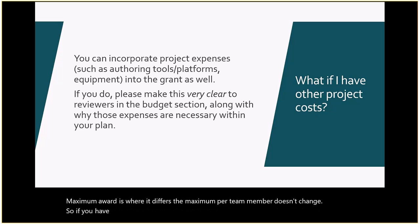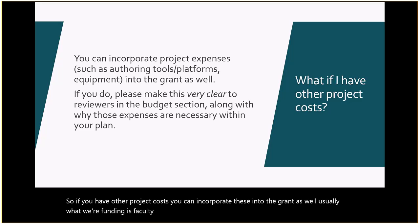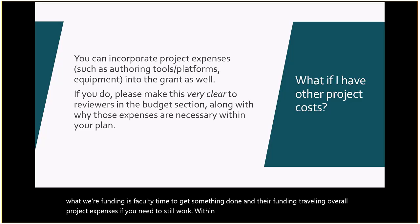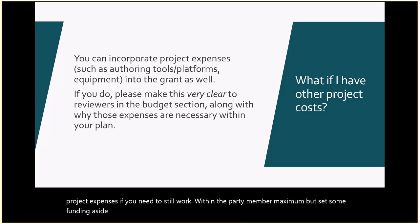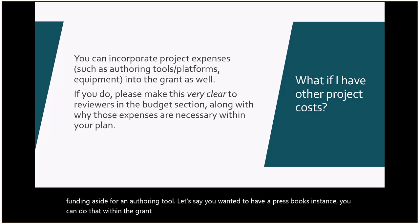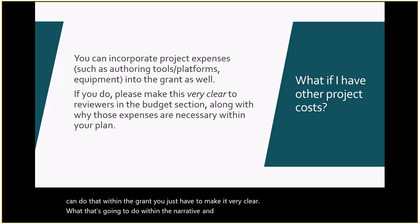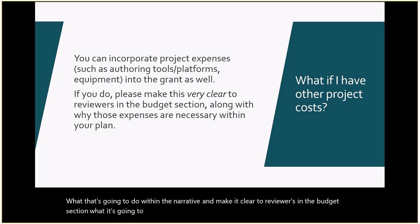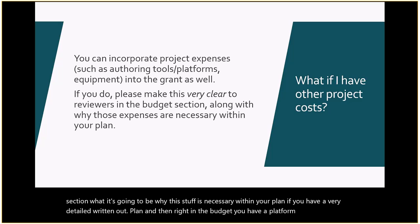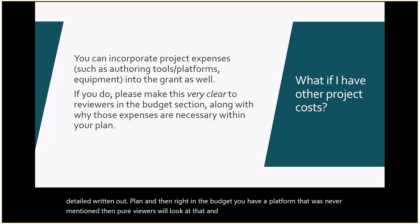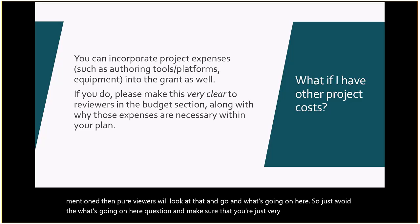If you have other project costs, you can incorporate these into the grant as well. Usually what we're funding is faculty time and travel/project expenses. If you need to set some funding aside for an authoring tool — say you wanted a Pressbooks instance — you can do that within the grant. You just have to make it very clear in the narrative and in the budget section. If your budget has a platform that was never mentioned in your written plan, peer reviewers will question that, so be very clear.